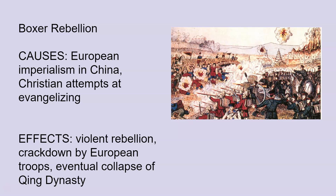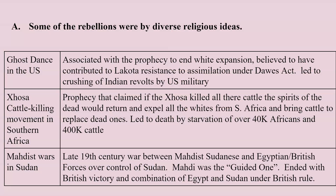Elsewhere, there was pushback against European imperialism. One of the most famous examples at the end of the 19th century is the Boxer Rebellion — a pushback against European imperialism in China but also against Christian attempts to evangelize and convert the Chinese. It was a very violent rebellion met with a violent crackdown; many European countries, including the United States, sent in troops to crush it. Eventually it contributed to the collapse of the Qing Dynasty, civil war in China, and the Communist takeover in the mid-20th century.